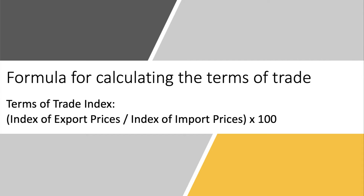There is a formula for calculating the terms of trade. You'll often be given some data and need to do a calculation, and you get a mark for showing the formula. The terms of trade index is the index of export prices divided by the index of import prices, multiplied by 100 to get the terms of trade index.